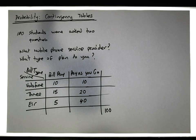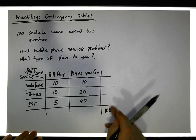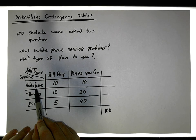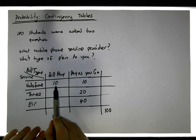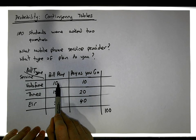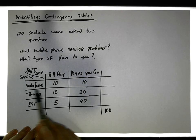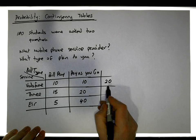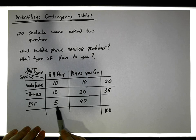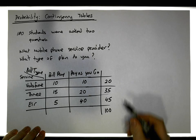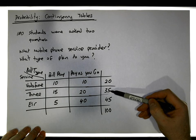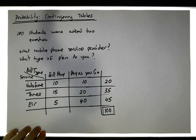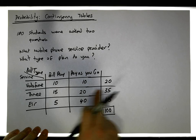What we usually do is add up the rows and columns to give us marginal totals around the margins of the contingency table. In total, 20 people responded with Vodafone — 10 bill pay and 10 pay as you go. With Three we have 15 and 20, giving us 35 people. With Eir we have 5 and 40, giving us 45 people. So 20, 35, and 45 gives us a total of 100.